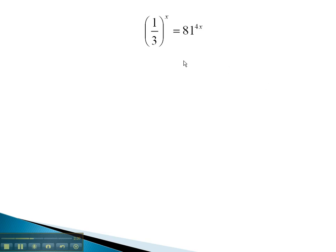For example, we can rewrite the 81 on the right side with a base of 3. Notice 81 is 3 to the 4th power. We still have the 4x outside of those parentheses.